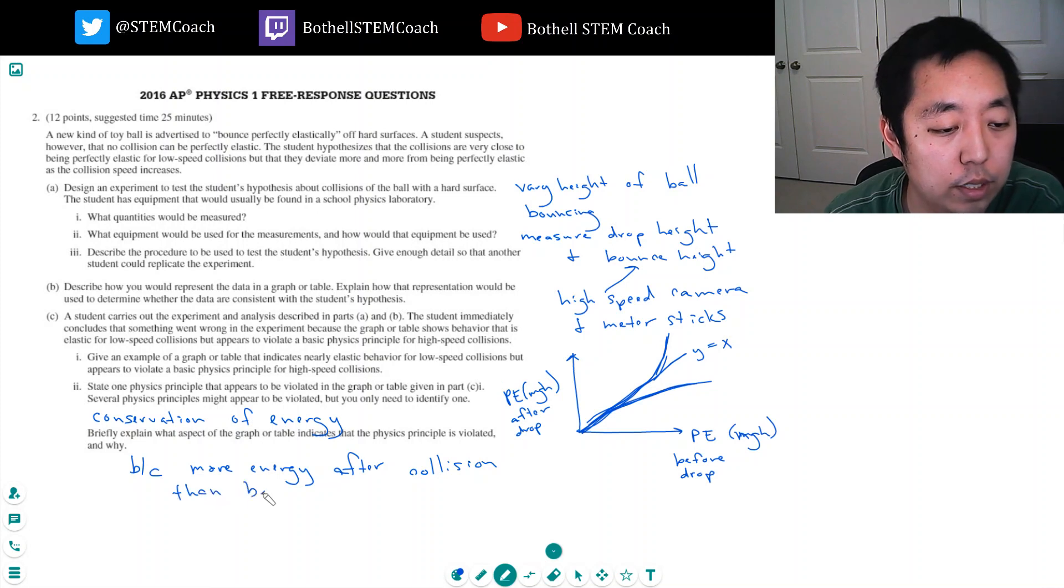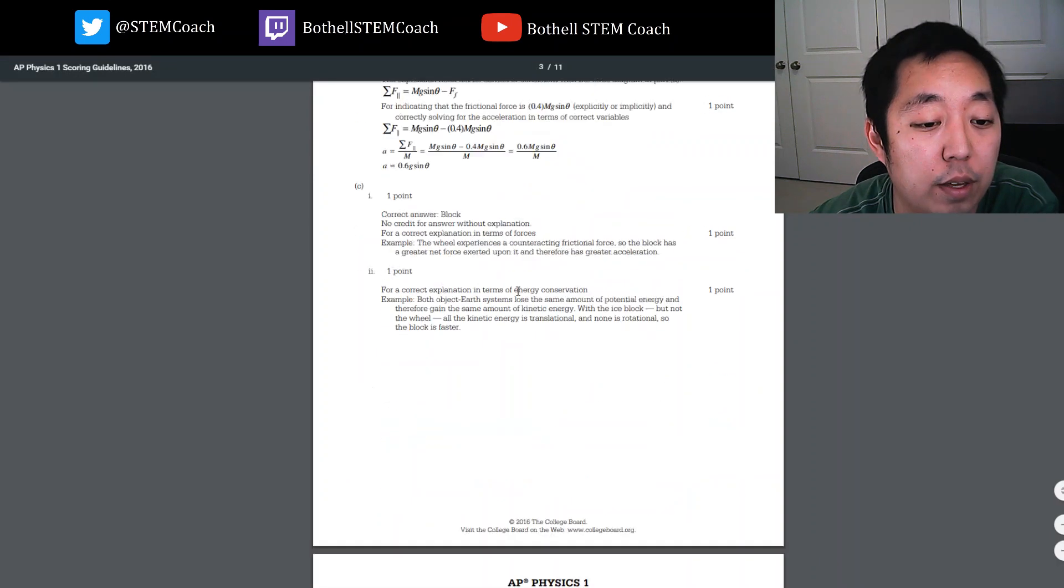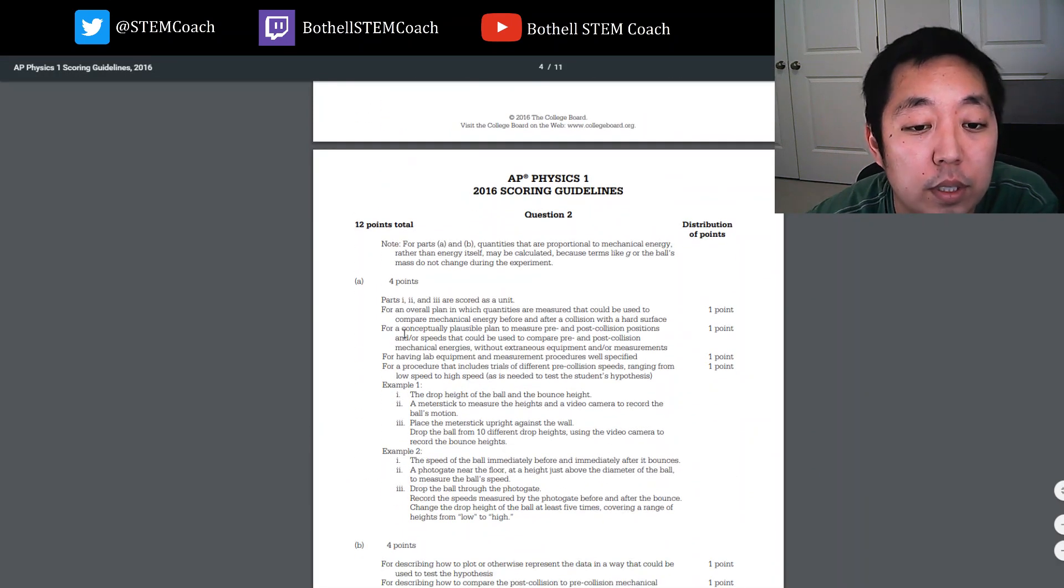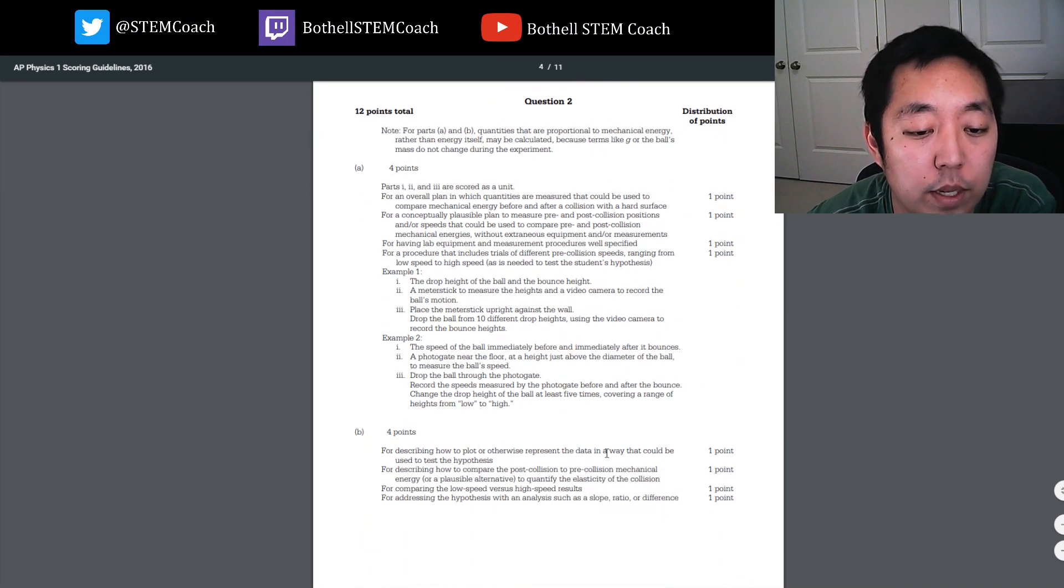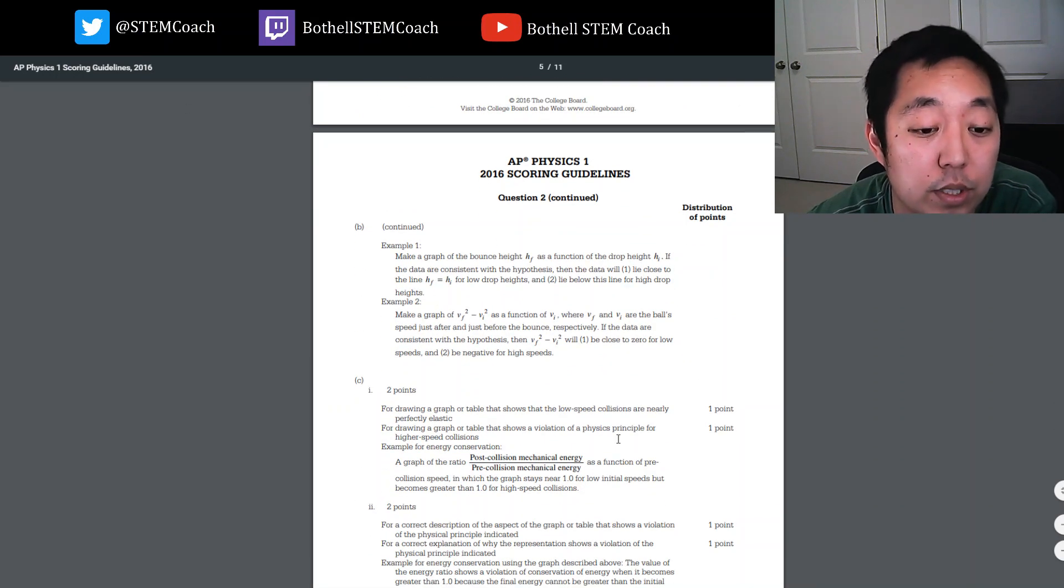There, these are pretty hard to do. This is just kind of how I would have thought about it. I'm a little curious how they would have set it up. Compare mechanical energy before and after collision with a hard surface, that's what I did. Conceptually plausible plan to measure pre-imposed collision positions. Example one, drop height meter stick, measure heights in the video camera, record the ball's motion, place the meter stick against the wall, drop the ball from ten different drop heights. Yeah, all right. For describing the data in a way that could be used to test the hypothesis, comparing load versus high speed results, addressing analysis of slope ratio or difference. Yeah, I described it to you, I didn't write it all out but I was describing what...